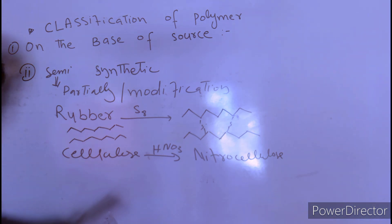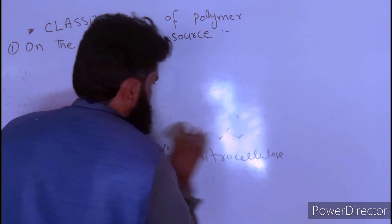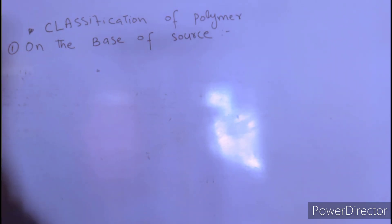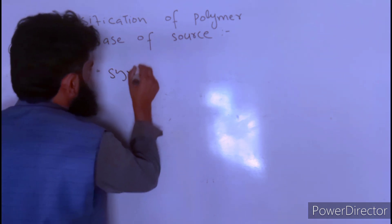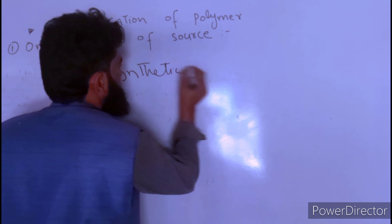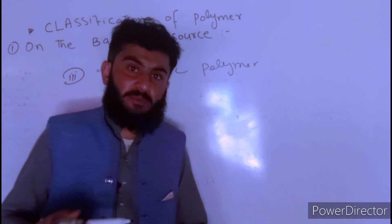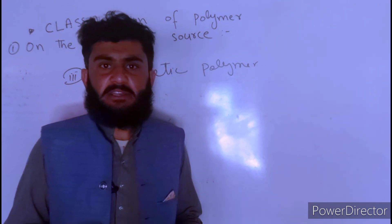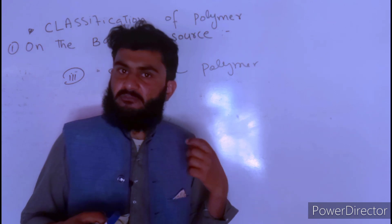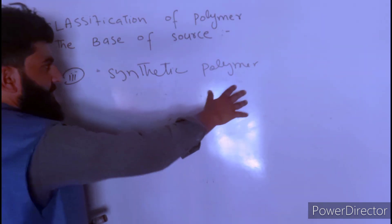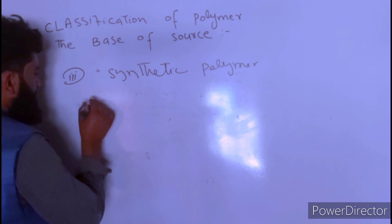The next class is synthetic polymers. Synthetic polymers are those polymers which are artificially obtained — obtained by the work of human beings.